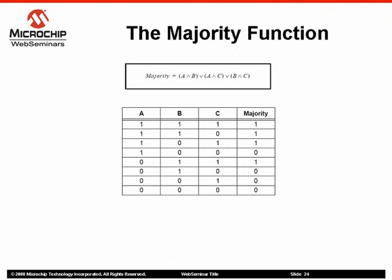The majority function is a boolean function which takes a number of n binary inputs and returns the value which is most common among them.